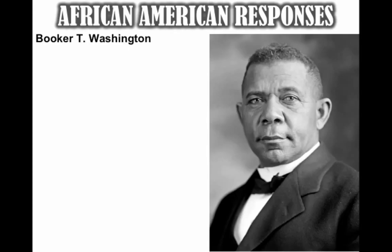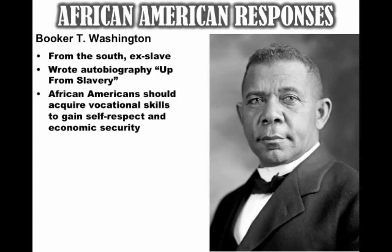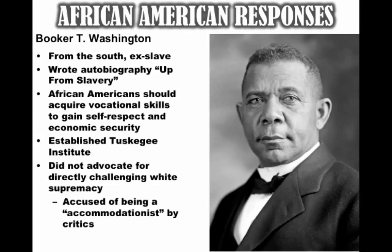African Americans are going to have their own unique experiences and approaches to this era. One key figure is Booker T. Washington — from the South, an ex-slave. He writes an autobiography called Up From Slavery, talking about the need for African Americans to acquire vocational skills and job skills in order to gain self-respect and economic security. He creates the Tuskegee Institute to help African Americans achieve these goals of vocational education. He does not advocate for directly challenging white supremacy, and some people accuse him of being an accommodationist because of his gradual approach. For Booker T. Washington, economic independence would be the ticket to black political and civil rights.